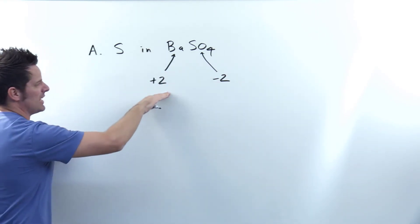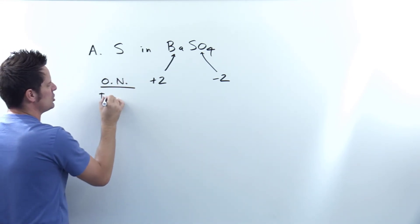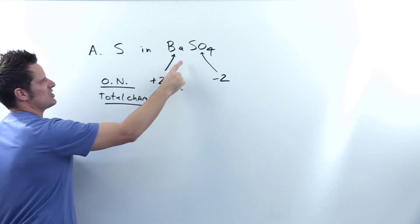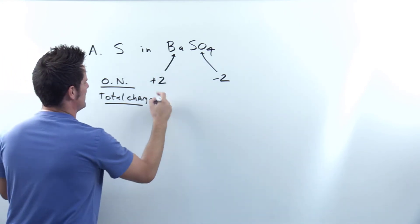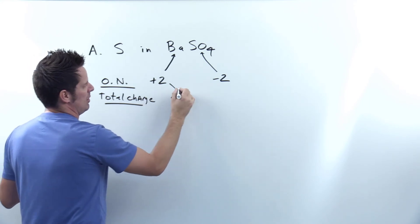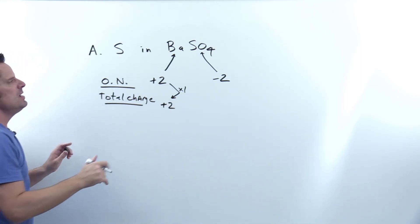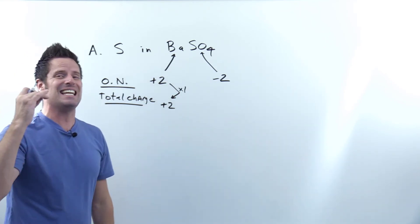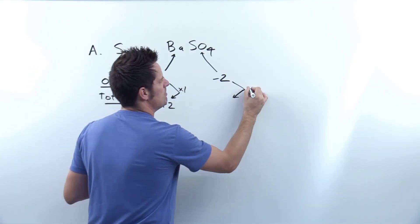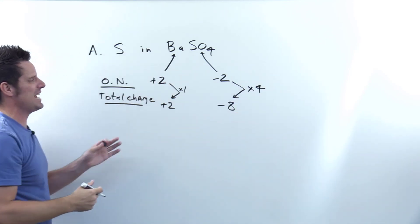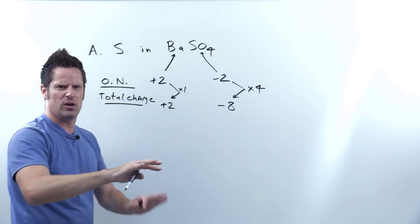Whenever I do oxidation numbers, I actually like to write out two rows. I make one row that is oxidation number, abbreviated as ON, and then another row that is total charge. What separates the two is the subscripts. Barium has an implied subscript of one, so the total charge of all those bariums is plus two. For oxygen, there are four total oxygens in that formula and each oxygen is negative two. So the total charge of all four oxygens combined is negative two times four, which is negative eight.